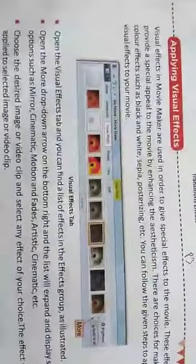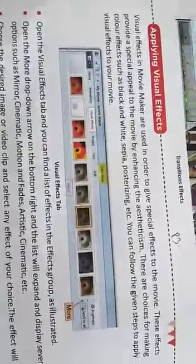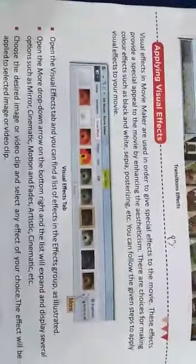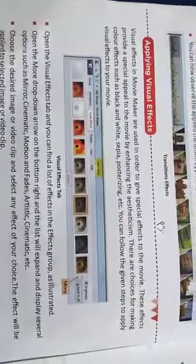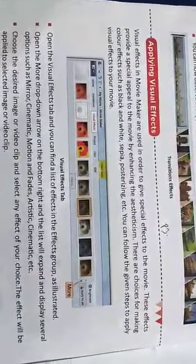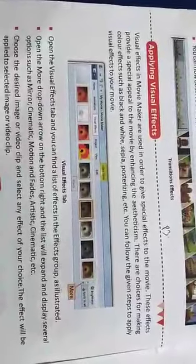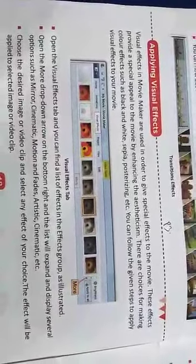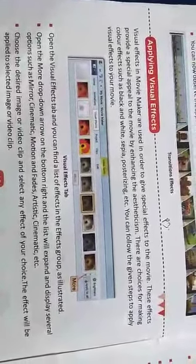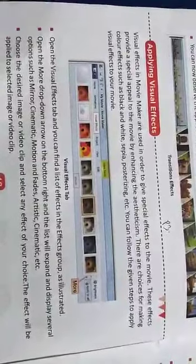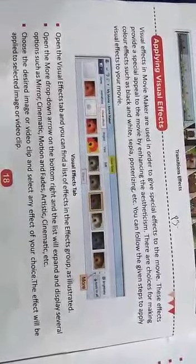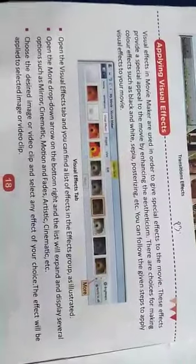Visual effects in Movie Maker are used to give special effects to the movie, providing a special appeal by enhancing the aestheticism and making it more appealing and realistic. There are choices for color effects such as black and white, sapphire, posterizing, etc.